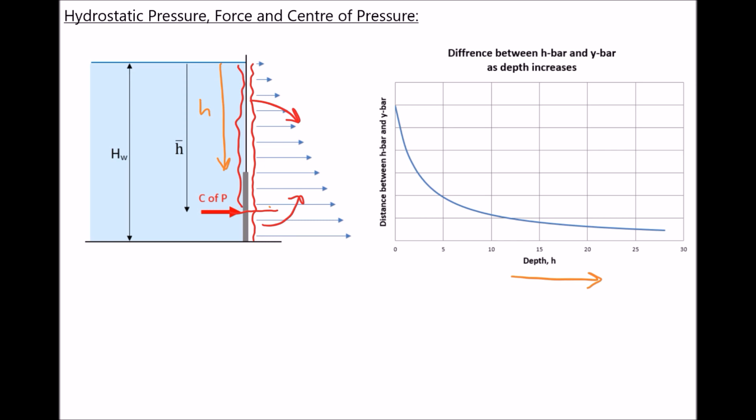To summarise: hydrostatic pressure is the effect of gravity pulling on the fluid, and hydrostatic force is the effect of that pressure across the area of the submerged surface in contact with that fluid. Centre of pressure is the point where the total sum of the pressure field acts. Therefore, the sum of the pressure field between the centre of pressure and the top of our submerged surface equals the sum of the pressure field between the centre of pressure and the bottom of our submerged surface. Those pressure fields result from the hydrostatic pressure above each of those given locations.